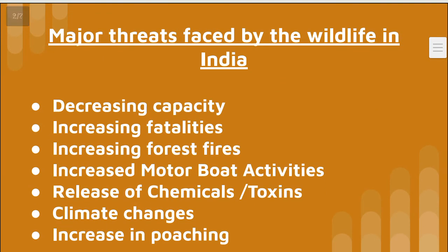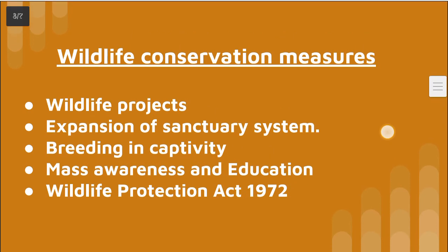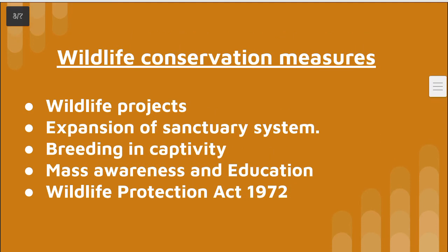Major threats faced by wildlife in India include decreasing habitat capacity, increasing fatalities, increasing forest fires, increased motorboat activities, release of chemicals or toxins, climate change, and increase in poaching. Wildlife conservation measures include wildlife projects, expansion of sanctuary systems, and breeding in captivity.